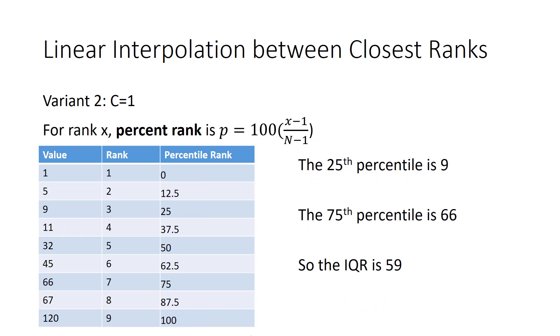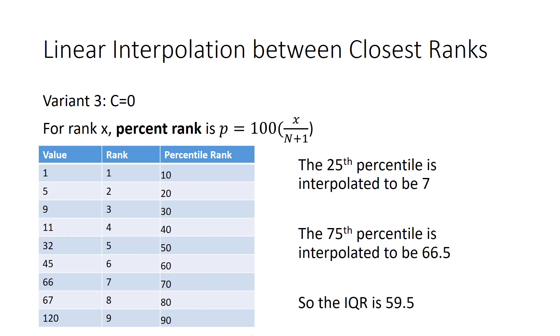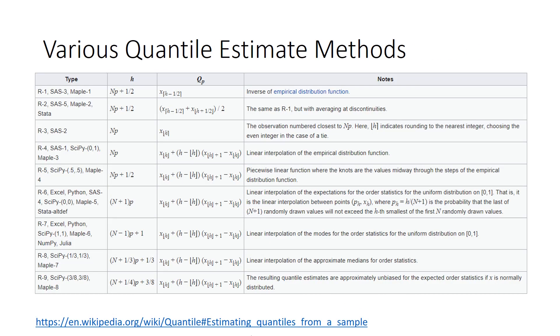Now, if you let C equals 1, which is a different variant, you get a different formula, and you get different percentiles. So, the 25th percentile and the 75th percentile are going to be just those values of 9 and 66. So, now we get an IQR of 59. And if we use the third variant, where C equals 0, then we get totally different percentiles. We have 7 and 66.5 as our percentiles for our two quartiles. So, we calculate IQR of 59.5.